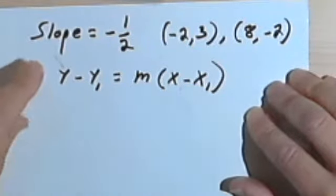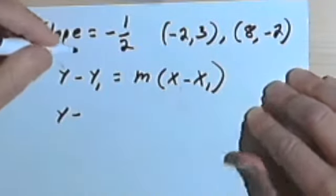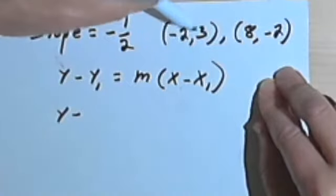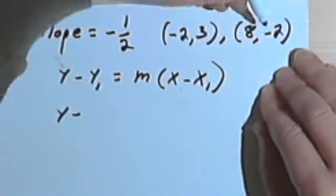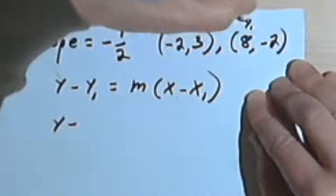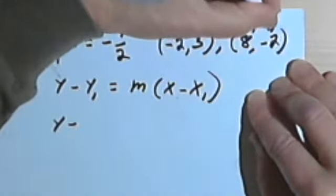And now what we have to do is plug in some numbers. So I've got y minus... and I think when I did the equation last time, using the other form, I did this pair. So let's use this ordered pair, 8 and negative 2. So I'll call that... I'm sorry, x sub 1, and I'll call this y sub 1.